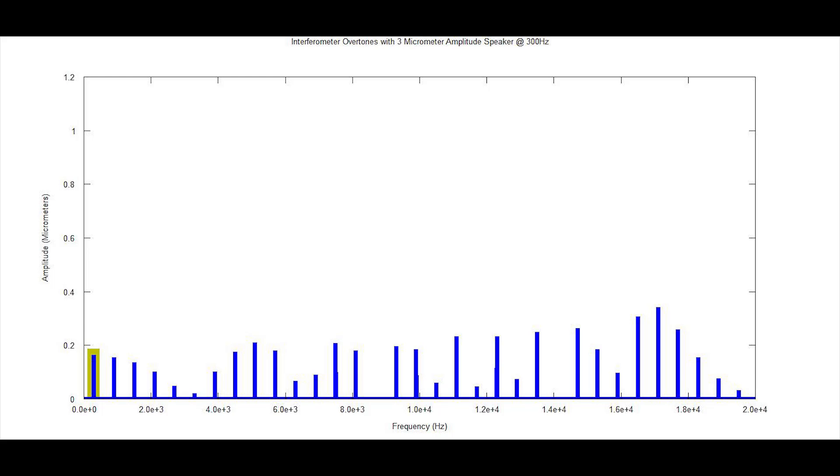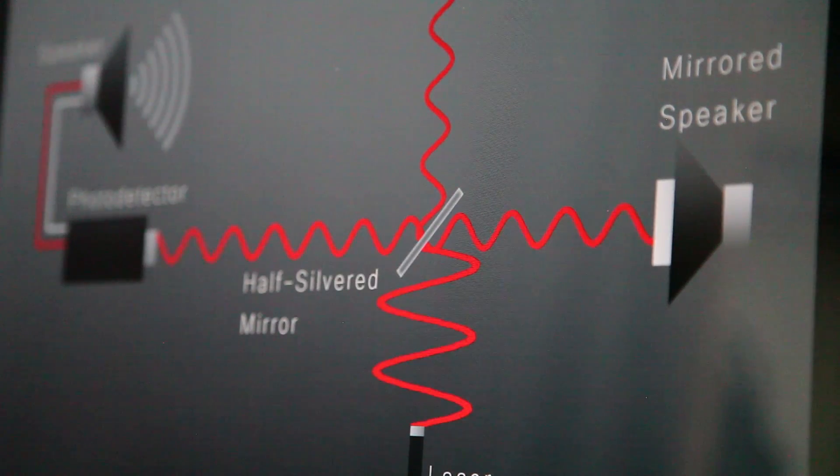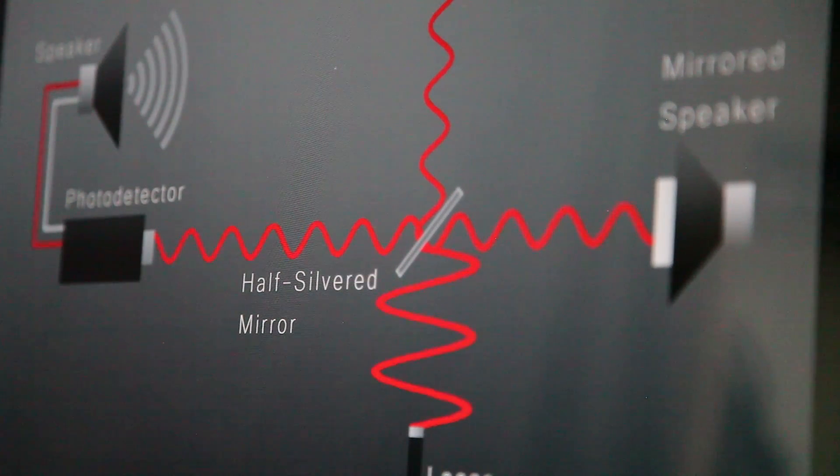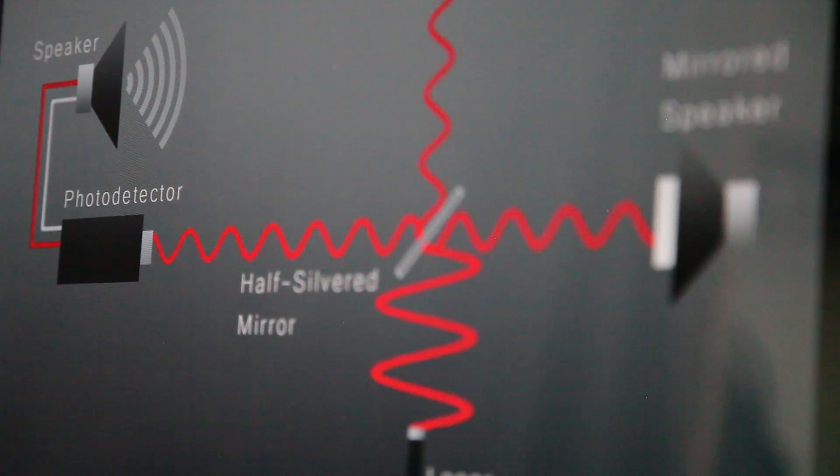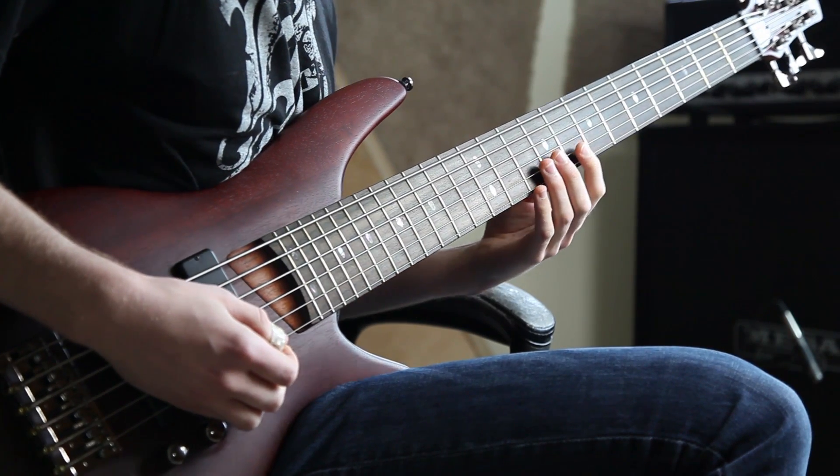This amplitude-overtone relationship is what makes our system responsive to dynamics. The harder we push the mirrored speaker, the more distorted our signal will become. Musicians love when a sound processor can respond to expressive playing, so let's hook up a bass guitar to our mirrored speaker and see how it sounds.